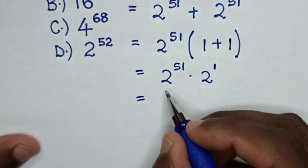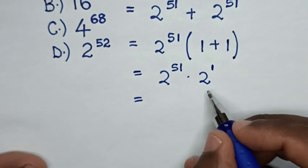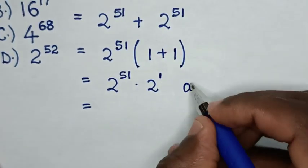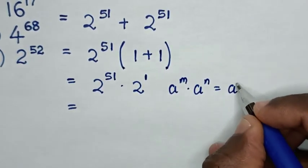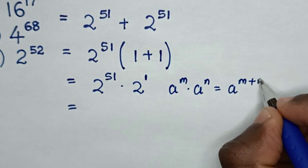Then we have multiplication of exponents with the same base, so we'll apply the rule: A power of M times A power of N equals A power of M plus N.